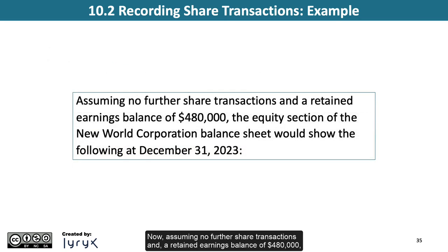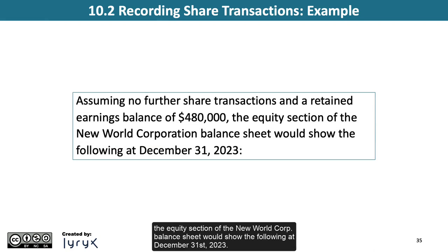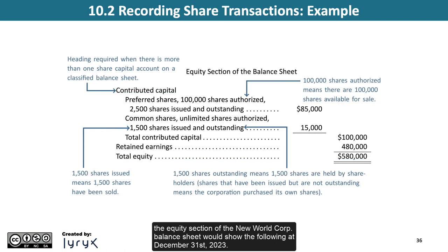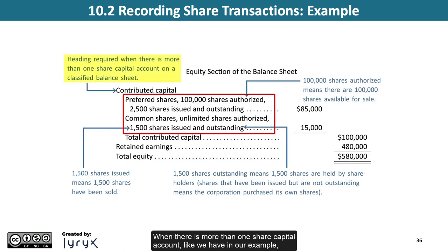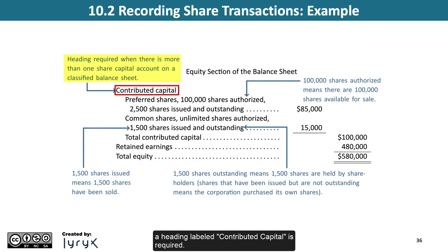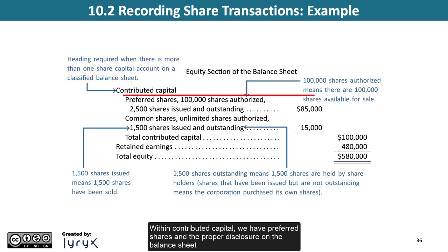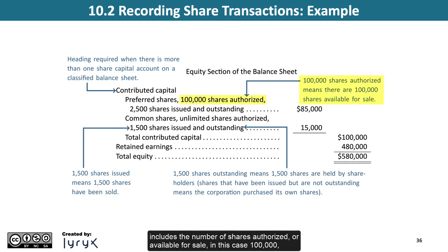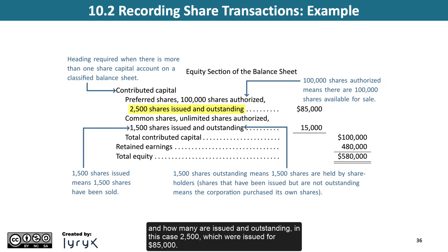Now, assuming no further share transactions and a retained earnings balance of $480,000, the equity section of the New World Corporation balance sheet would show the following at December 31, 2023. When there is more than one share capital account, a heading labeled Contributed Capital is required. Within Contributed Capital, we have preferred shares, and the proper disclosure includes the number of shares authorized — in this case 100,000 — and how many are issued and outstanding — in this case 2,500 — which were issued for $85,000.